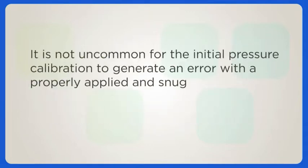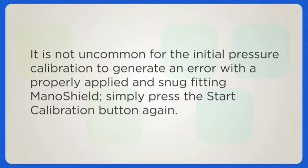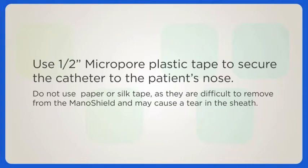It is not uncommon for the initial pressure calibration to generate an error with a properly applied and snug fitting ManoShield. If you do receive an error message, simply press the start calibration button again to recalibrate. Use half-inch micropore plastic tape to secure the catheter to the patient's nose. Do not use paper or silk tape, as these are difficult to remove from the ManoShield and may cause a tear in the sheath.